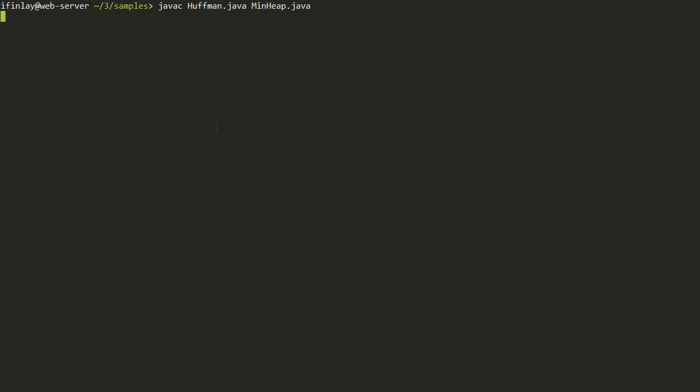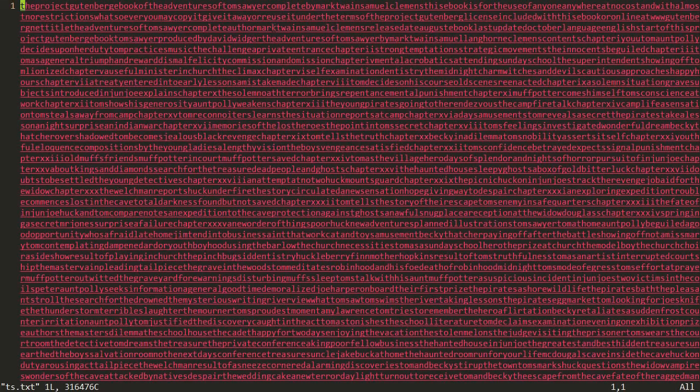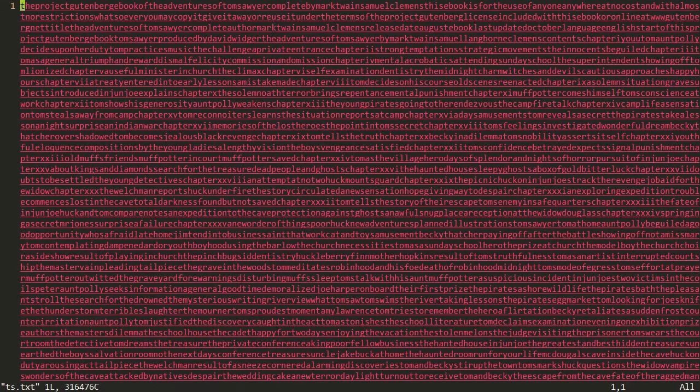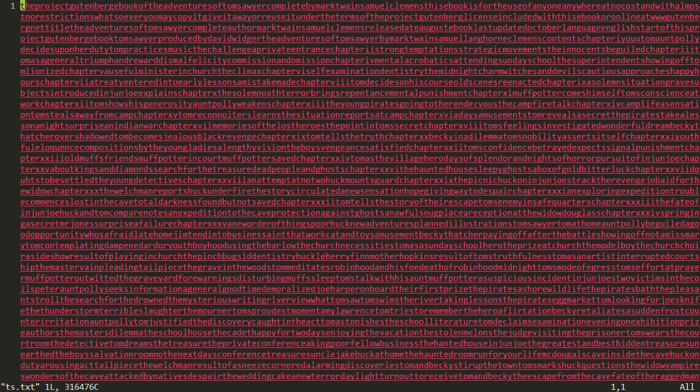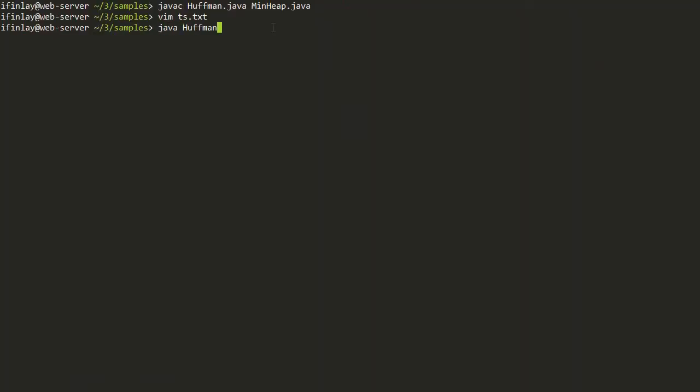So we can compile this program, which is contained in Huffman.java. It also uses the min heap that's stored in MinHeap.java. The file I'm going to run it on is TS.text, which is Tom Sawyer.text. It's actually the complete text of Tom Sawyer by Mark Twain, except it's entirely consisting of lowercase letters. So I took out all the spaces and all the punctuation and then converted all the capital letters into lowercase letters. So it's just the string of letters that comprise the story. Again, this was just done to keep it as simple a program as possible. So it only deals with these lowercase letters, but all the lowercase letters from the story are actually in here.